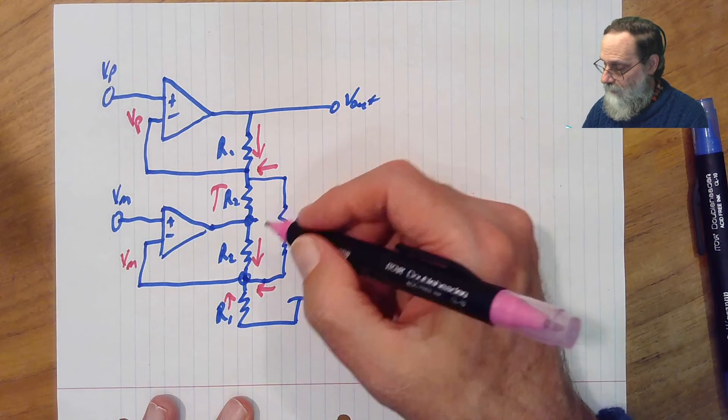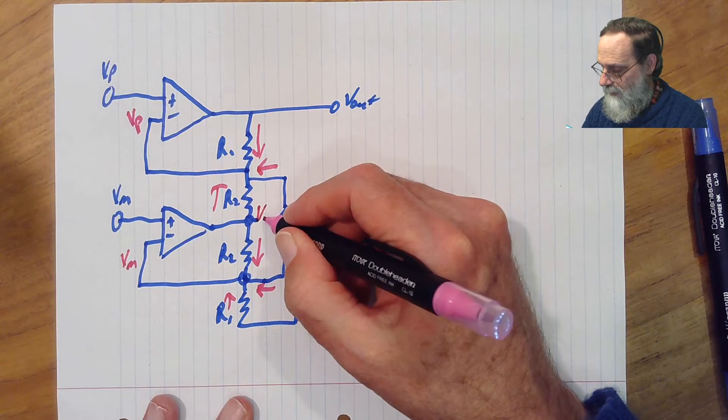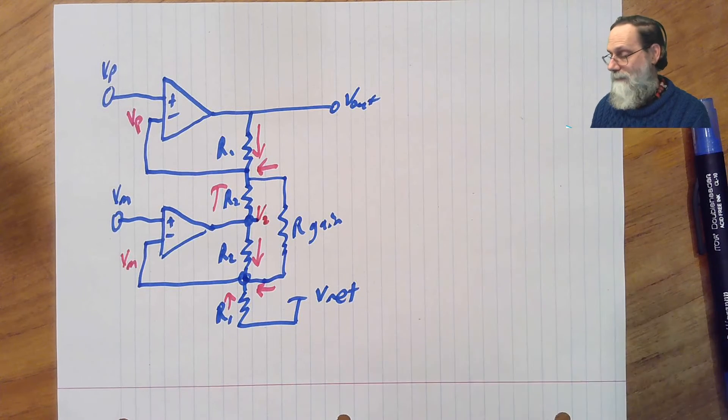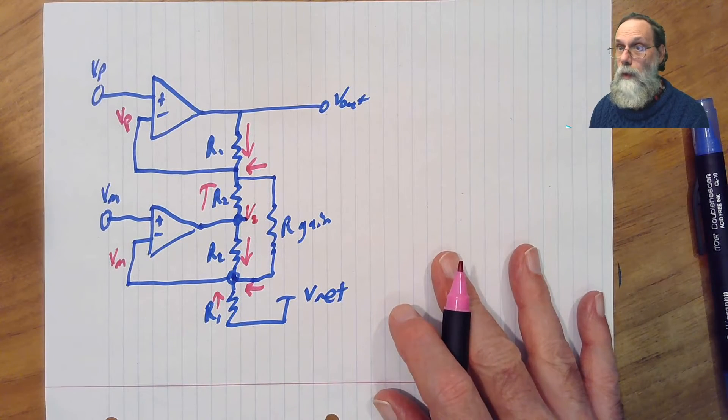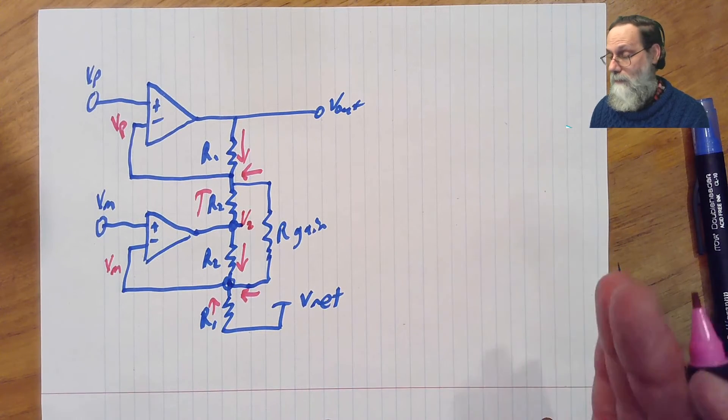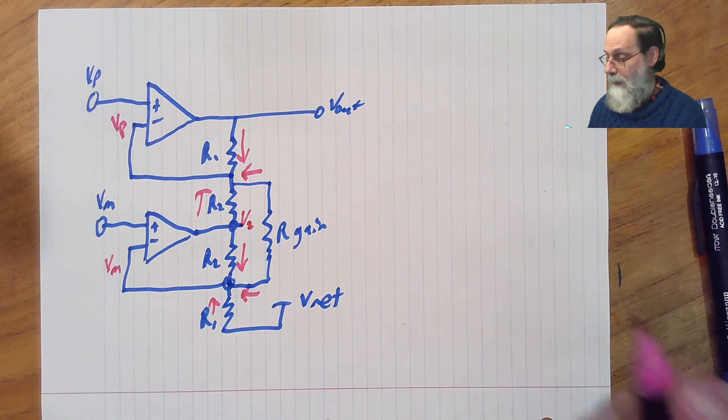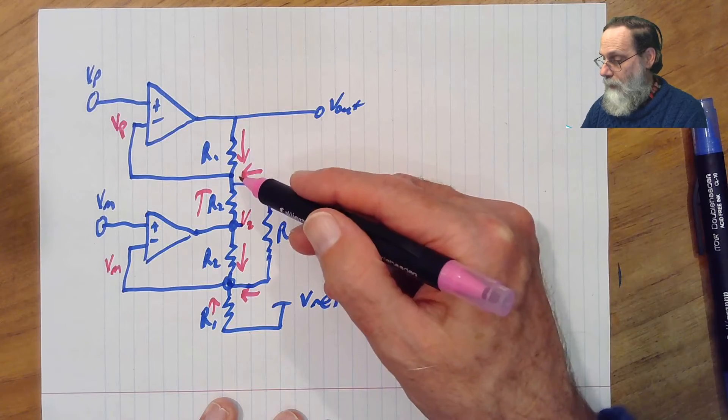And that just leaves this node here, which is kind of unknown. Well, let's not worry about that for a moment and just figure out what are the equations for the current law, and maybe we can simplify v2 away. So, if we look here,